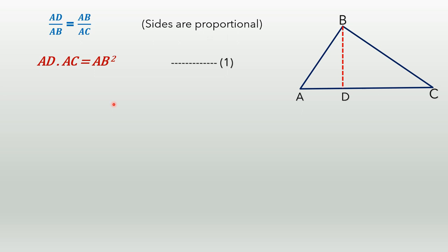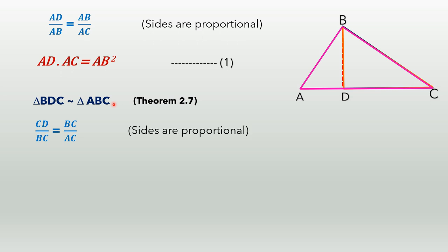Similarly, take another two triangles — triangle BDC and triangle ABC. Here also, Theorem 2.7 is applicable. So, CD/BC = BC/AC. The sides are proportional. On cross multiplication, we get CD × AC = BC × BC, that is BC². Consider this as equation number 2.